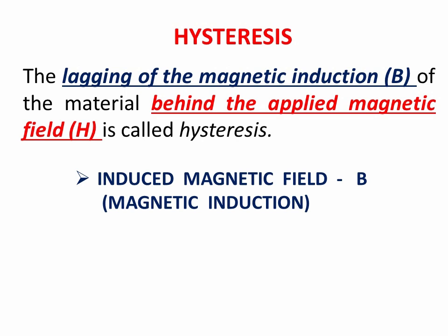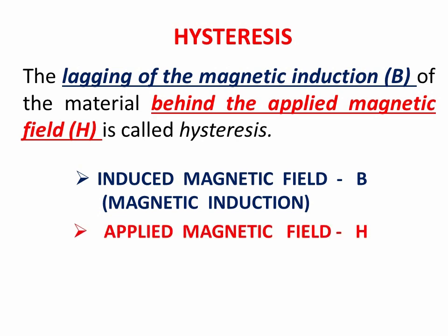The first one is the induced magnetic field, also called magnetic induction, denoted by capital B. This is the magnetic field produced inside a material by means of an external magnetic field. The second one is the applied magnetic field, denoted as capital H — this is the external magnetic field given to a material to make it become a magnet. Simply put: capital B is the output, capital H is the input.